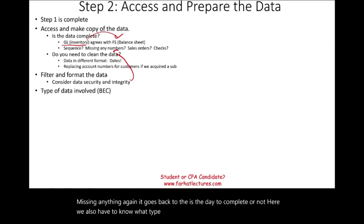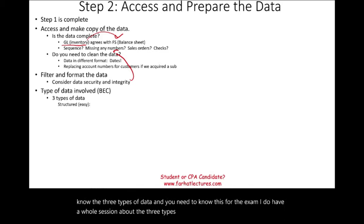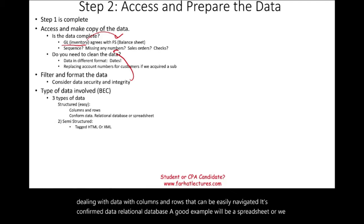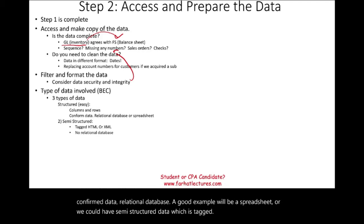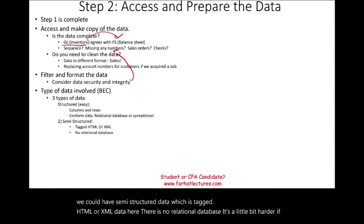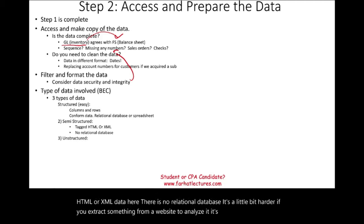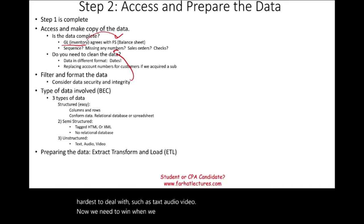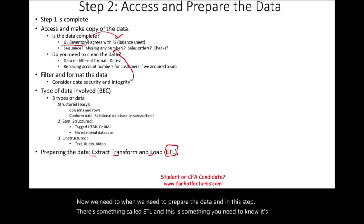We also need to know what type of data we are working with. There are three types: structured data — the easiest to work with, with columns and rows in a relational database like a spreadsheet; semi-structured data — tagged HTML or XML data with no relational database, harder to extract; and unstructured data — the hardest, such as text, audio, or video. In this step there is also ETL: extract, transform, and load. Extract means pulling the data from sources. Transform means cleaning the data — the hardest part, since garbage in means garbage out. Load means uploading the data in the proper format, whether Excel, Tableau, or otherwise.